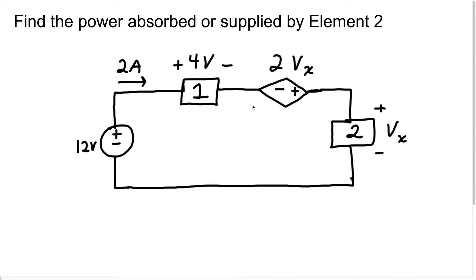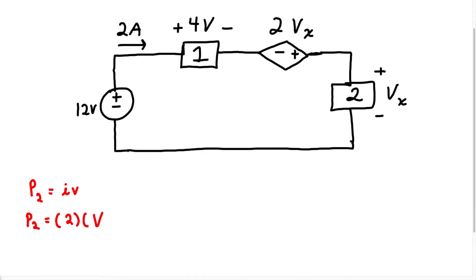We can say the power in element 2 is going to equal current times voltage. The current is going to be positive 2 amps, because the current is going to flow into the positive terminal. The voltage is going to be Vx. When we solve for the power, we're going to have current times voltage: 2 times Vx, and that's going to give us 2Vx.